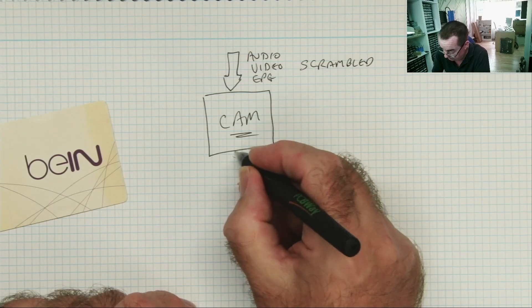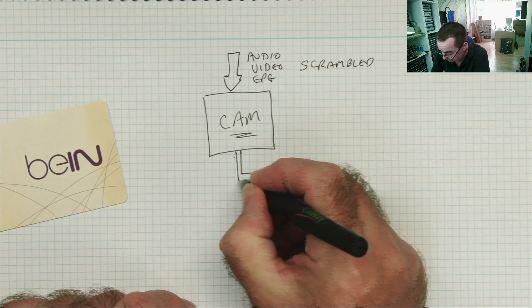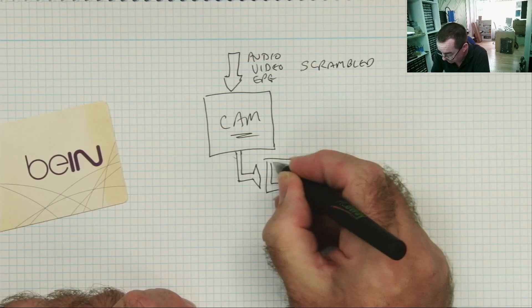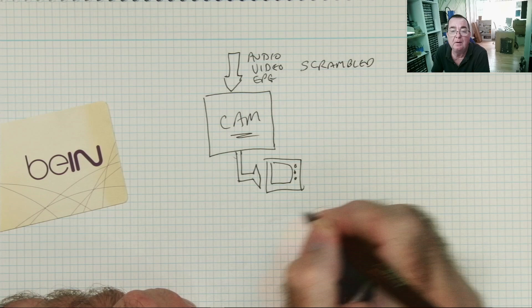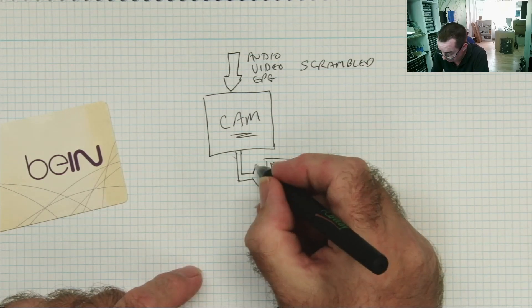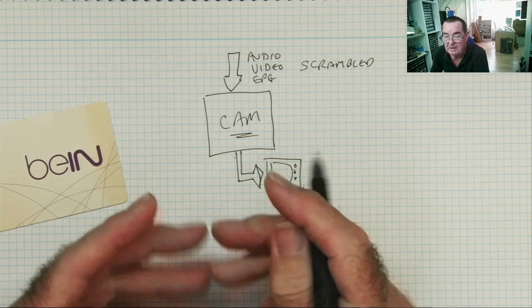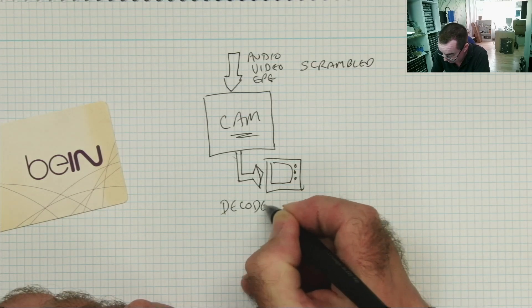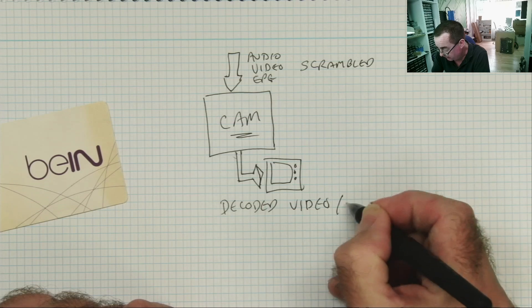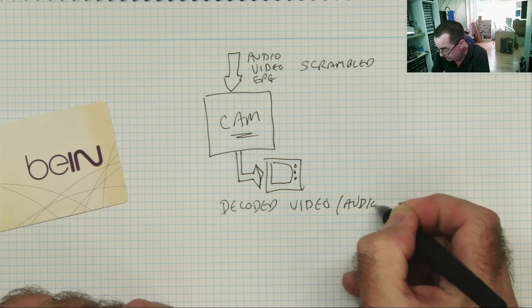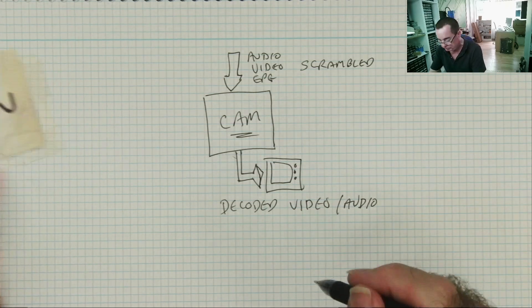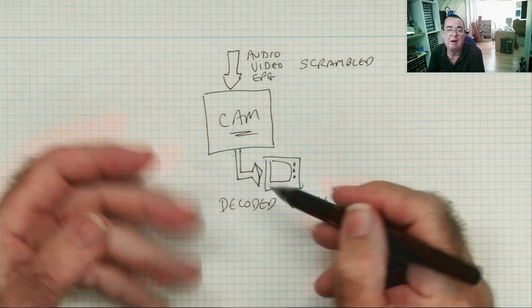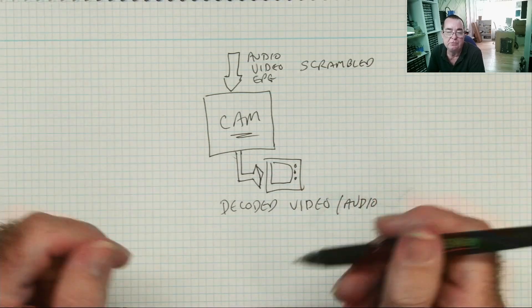Depending on the type of scrambling system used, you would have different modules for things like Conax, Irdeto, Seca, and so on. Viaccess. And there were a few others. That's what actually decodes the video and the card fitted into the cam. These days, it's all done by the processor inside the satellite box. So the cam is built into that, but we still have the card.